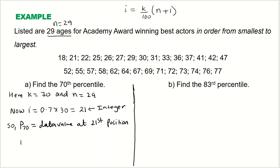So we need to find the data value at the 21st position. Counting through the ordered data set, the value at the 21st position is 64. Therefore, the 78th percentile is 64. This is the first case where i is an integer.